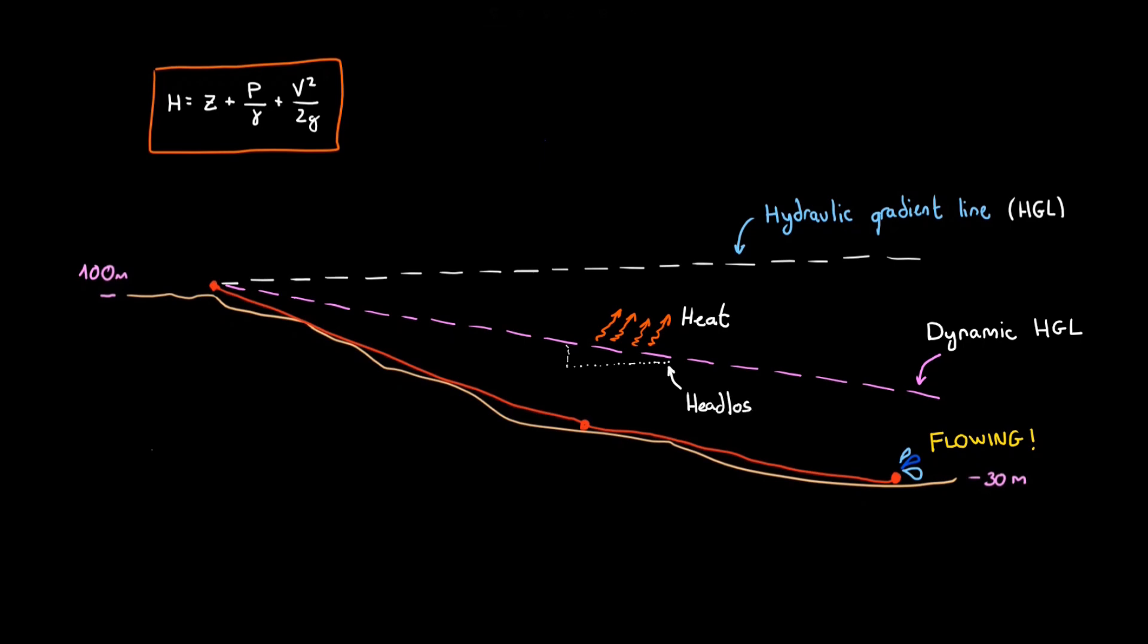We call this slope head loss, J, and it is measured in meters per kilometers. I like to imagine this line as the path of a glider airplane that loses so many meters of altitude for each kilometer of travel, and that my job is to keep it from crashing into the ground. That would be the equivalent of zero pressure.